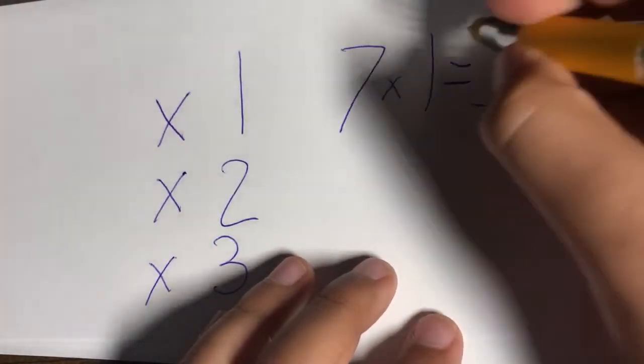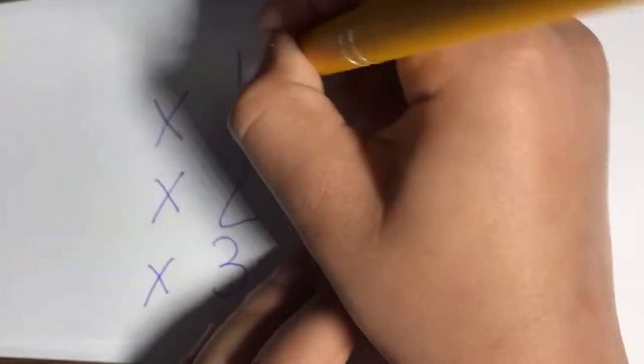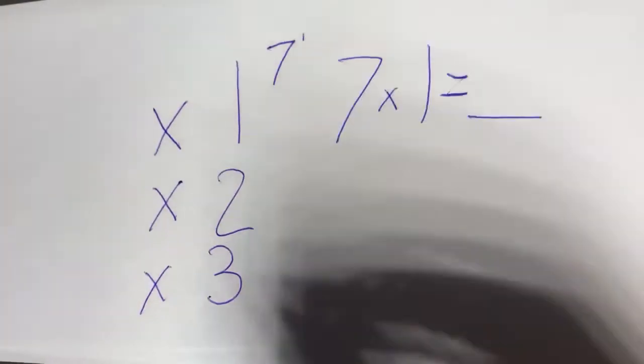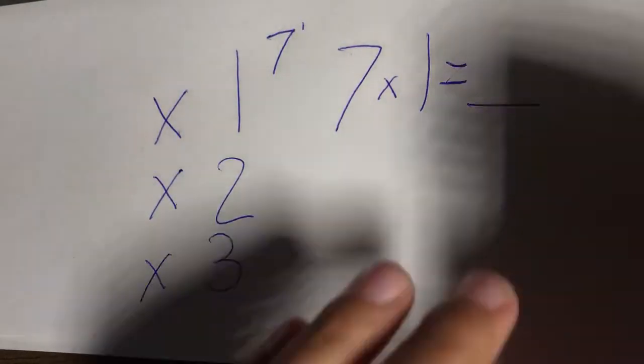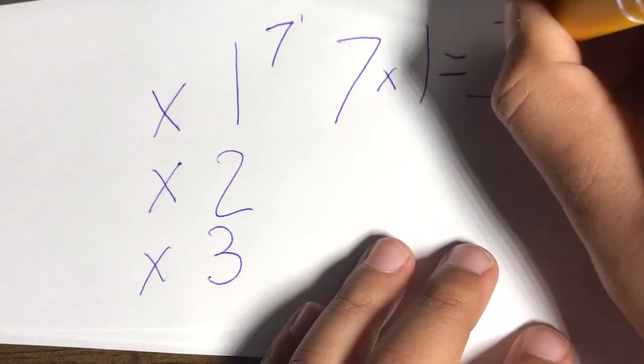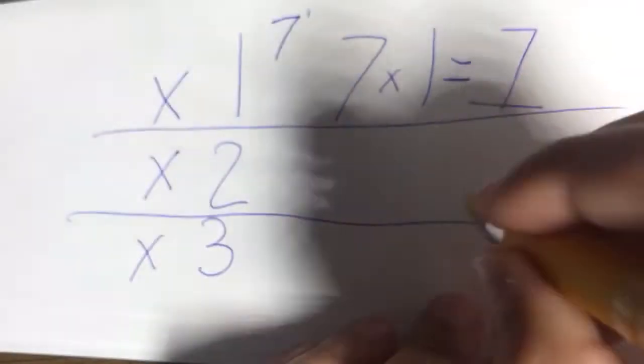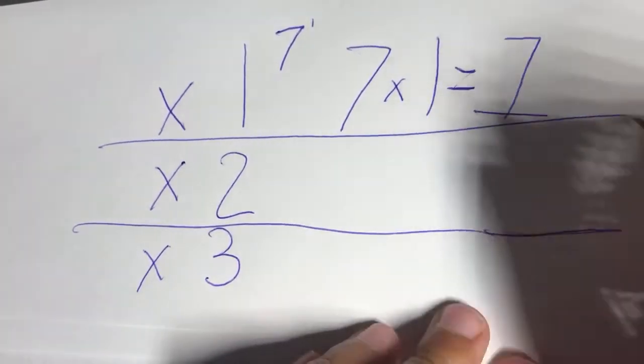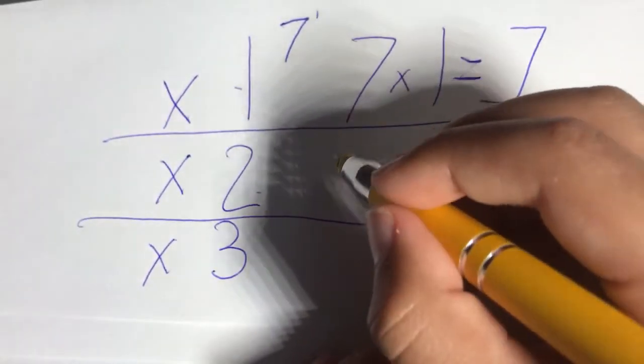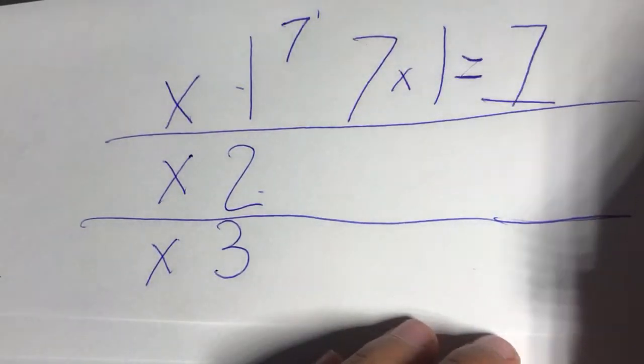But it's really easy. You just have to count by seven one time. So seven times one is seven. Next up, the one for the two, get it? Okay, enough funniness.